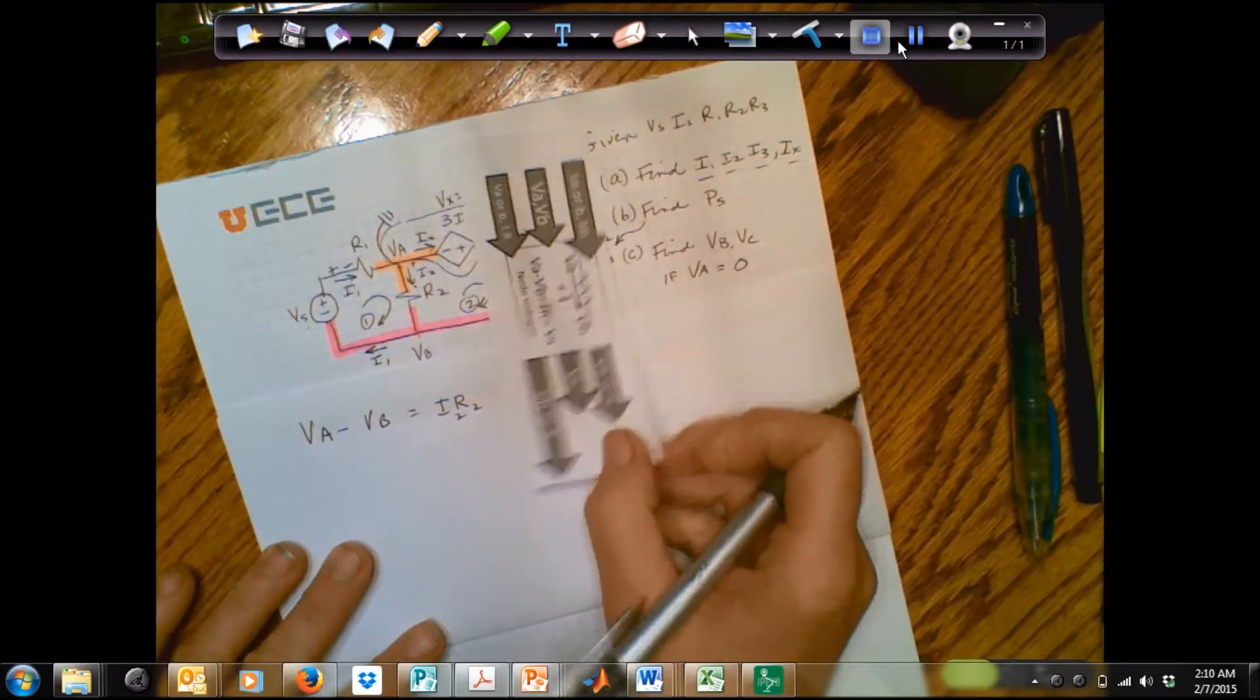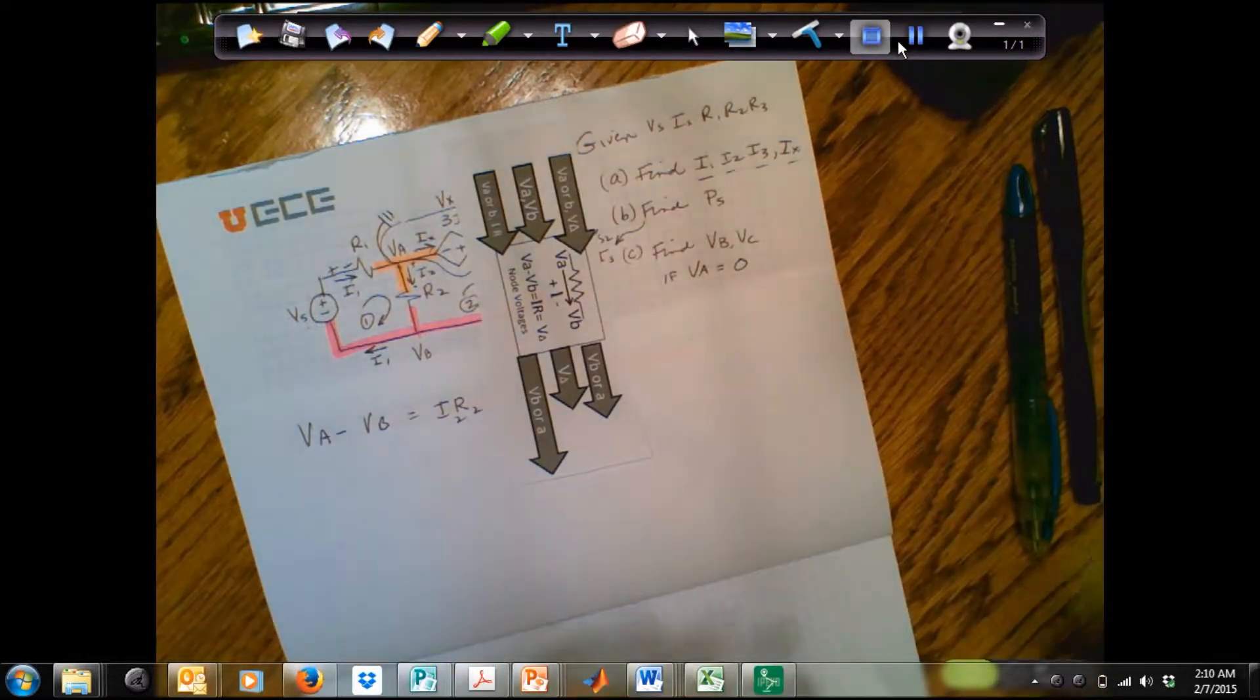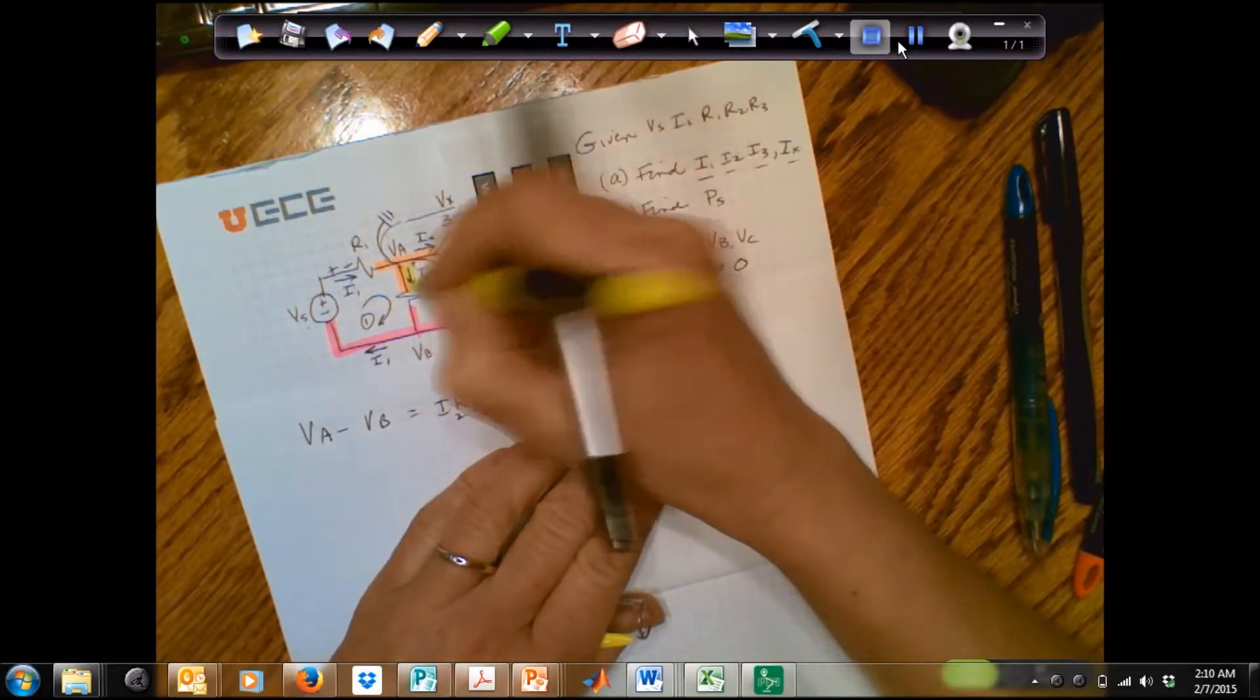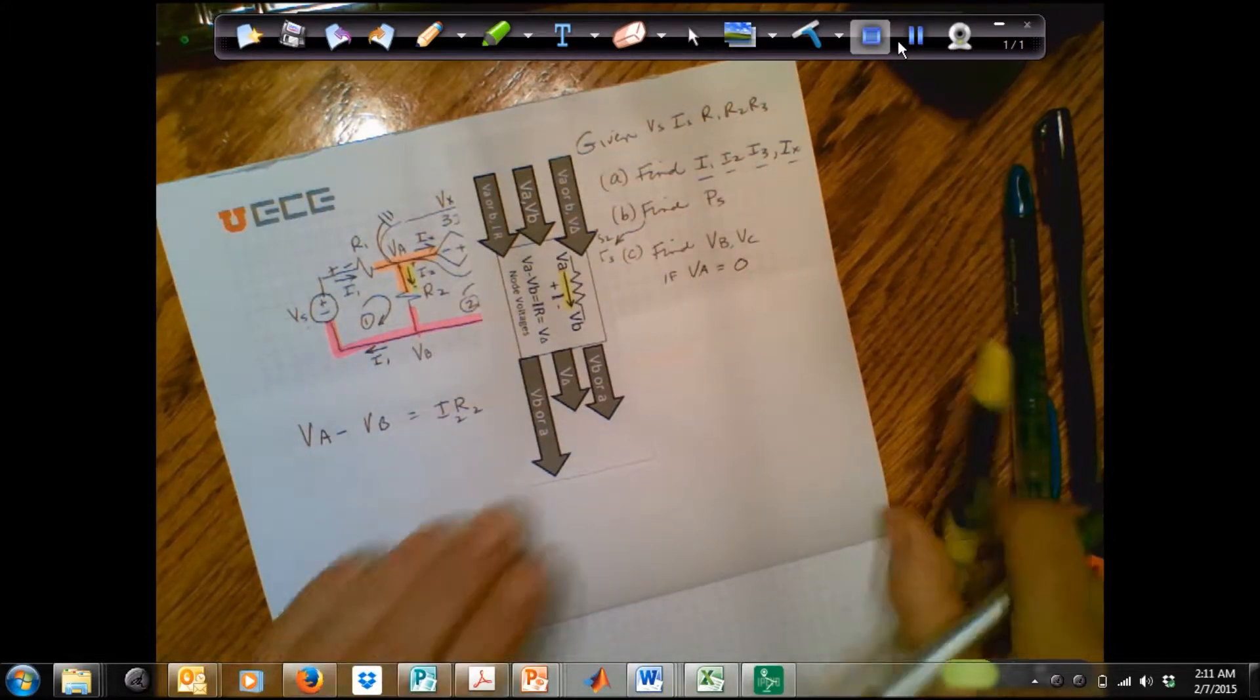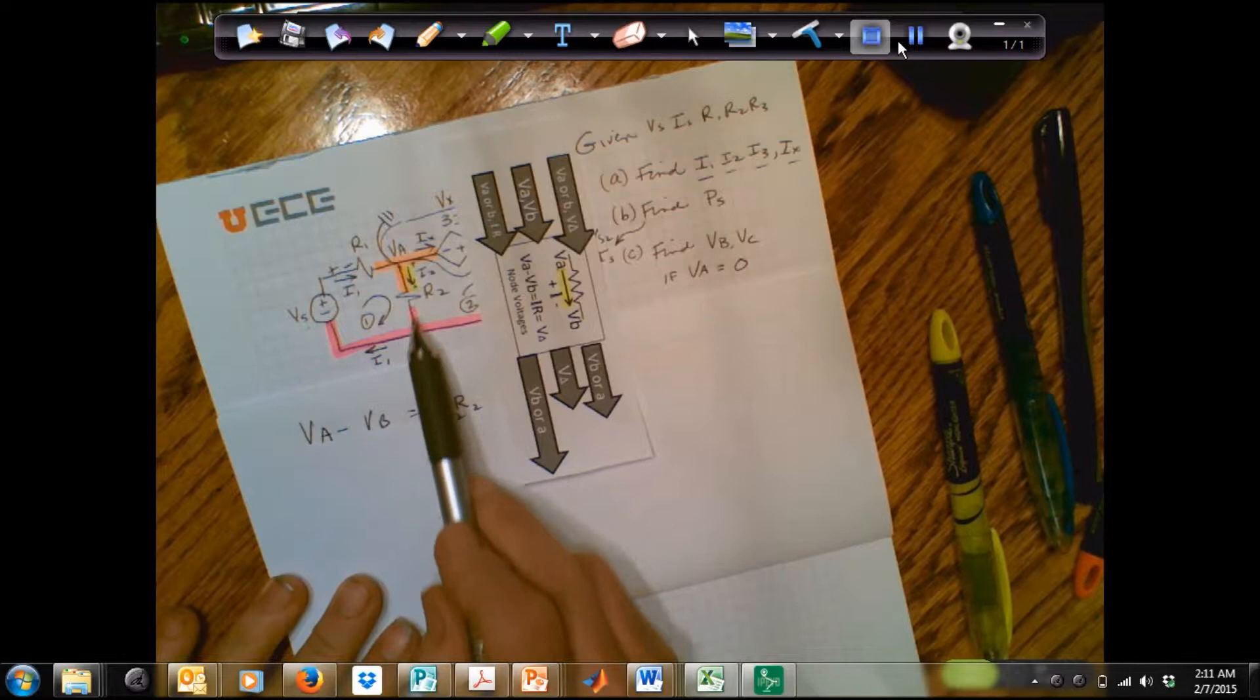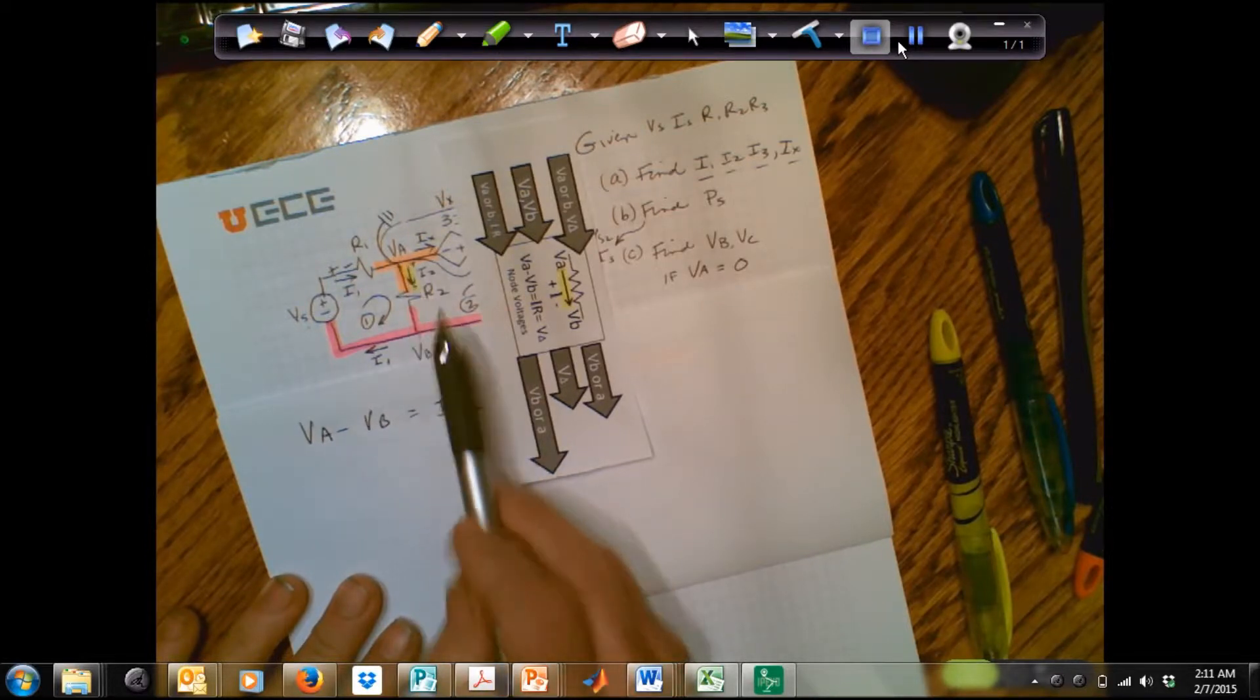I have to line my current, this current. Let's get this current yellow. I have to line this yellow current up with that yellow current. So make sure that they're going in the same direction so I get my signs correct. So VA minus VB is equal to I2 times R2.